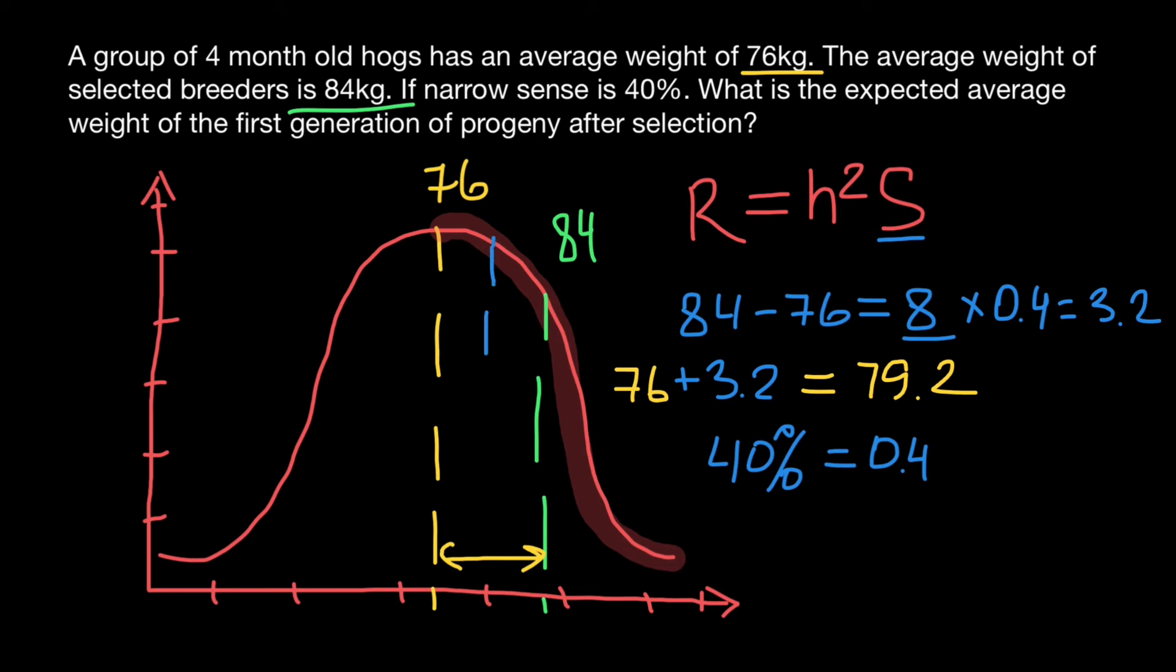This is going to be the mean of the F1 generation: 79.2, mean of the F1 generation. And this is going to be our answer today. But still, some of you can be confused. Why, if we choose parents whose mean weight is 84 kilograms, the mean of the F1 generation of the progeny is going to be 79.2 kilograms and not 84 kilograms?